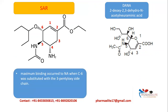Let's study the structure-activity relationship. First, maximum binding to neuraminidase occurs when C6 is substituted with a 3-pentyl oxide side chain. This is called 3-pentyl oxide because at the third position there is an oxy group and a 5-carbon chain — pentyl. When 3-pentyl oxide substitution is done on carbon 6, maximum binding of Oseltamivir to neuraminidase occurs, giving maximum inhibition.